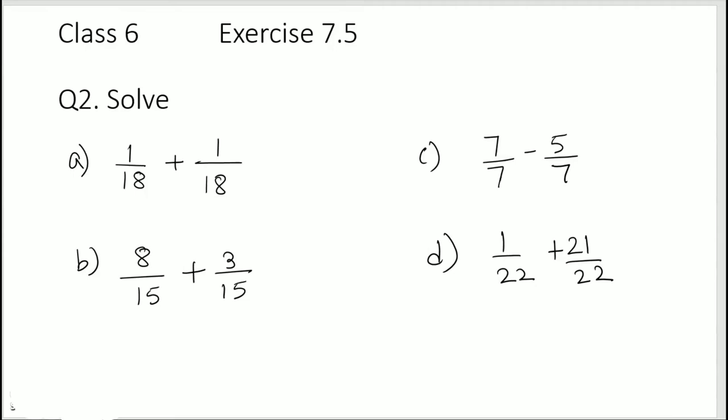The first one is 1 over 18 plus 1 over 18. So the denominator is same. Whenever the denominator is same, we just need to add the numerators and that's it. So 1 plus 1 over 18. 1 plus 1 is 2, so 2 over 18. And if you simplify this, 2 1s are 2, 2 9s are 18. I am dividing 2 and 18 by 2. So 2 divided by 2 is 1 and 18 divided by 2 is 9. My answer is 1 over 9.